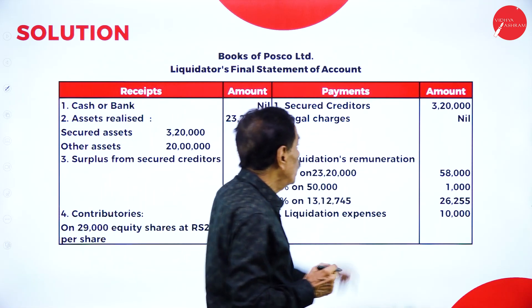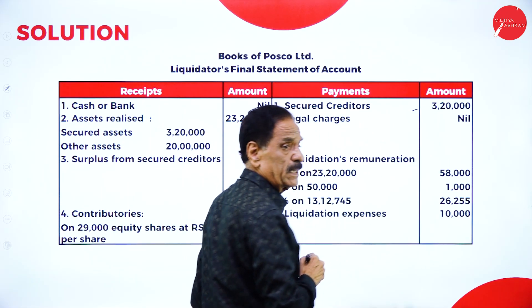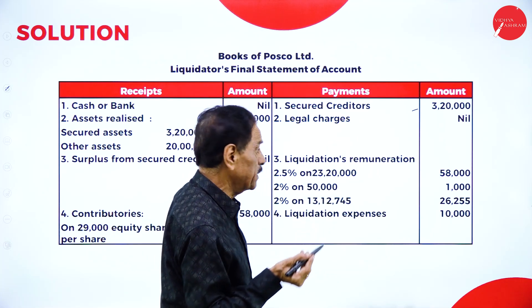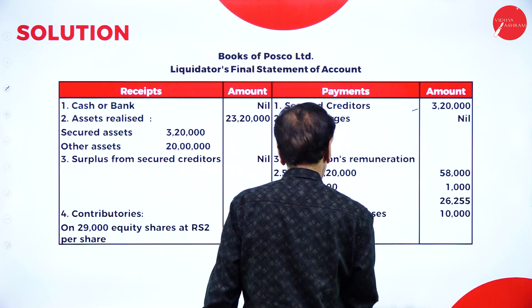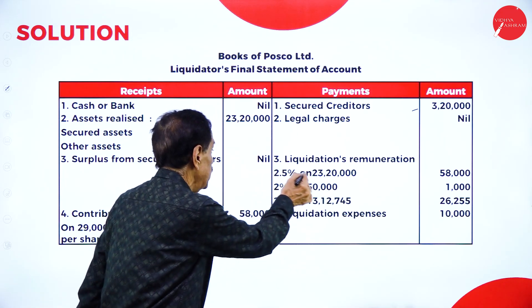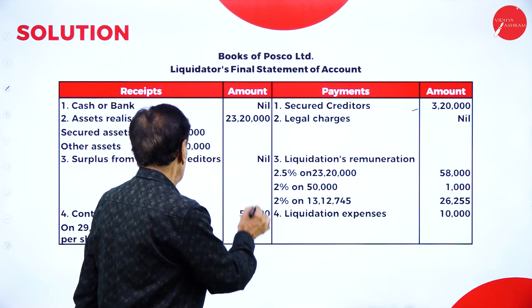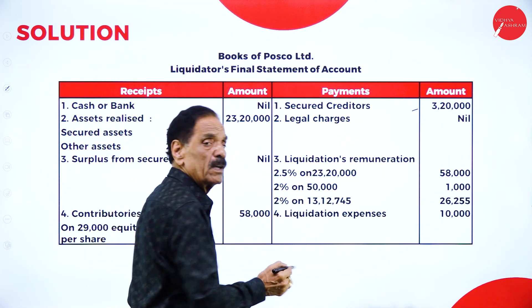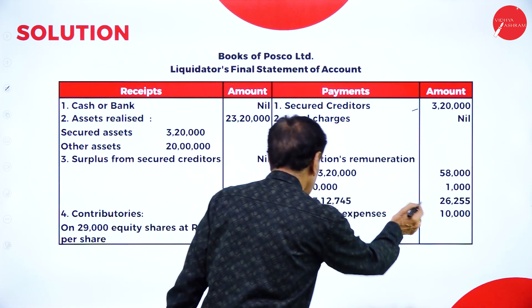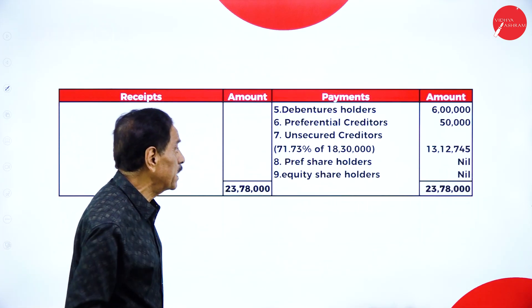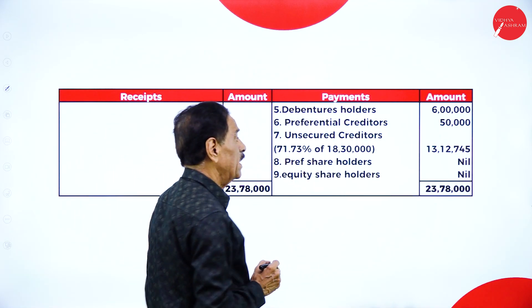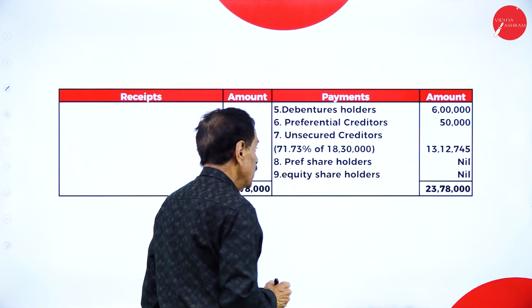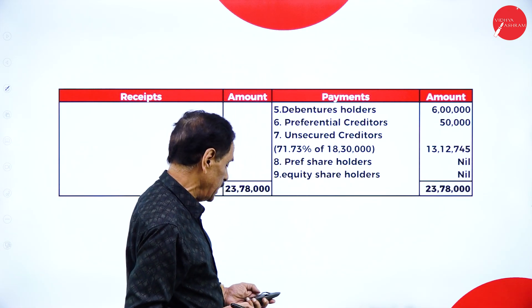Now we make the payments. First, pay secured creditor Rs.3,20,000 — the secured creditor's security realized Rs.3,20,000 against Rs.3,50,000 owed. Legal charges: nil. Liquidator's remuneration: 2.5% on Rs.23,20,000. Then 2% on preferential creditors and 2% on unsecured creditors — shown in the working note. Then liquidation expenses Rs.10,000, debenture holders Rs.6 lakh, preferential creditors Rs.50,000, and then the unsecured creditors. No amount is available for preference or equity shareholders.